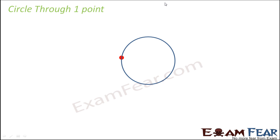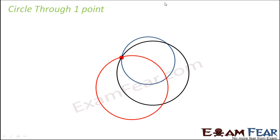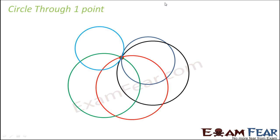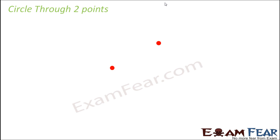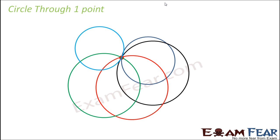So we can draw a circle like this, like this, like this. If you see, there are so many circles which I could draw from one point — an infinite number of circles.